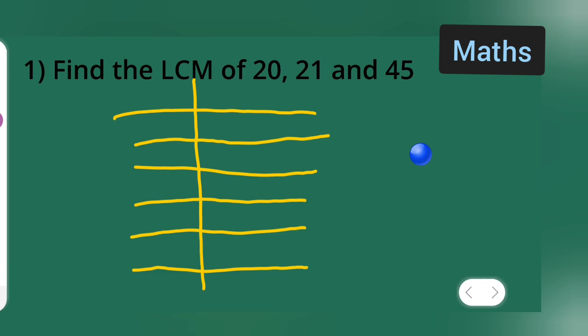Now, what you will have to do over here is find the LSM of 20, 21 and 45. Okay, so let us start. So, 2, okay sorry first 20, 21 and 45.